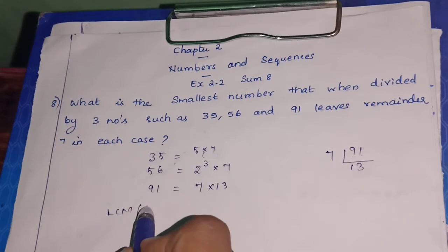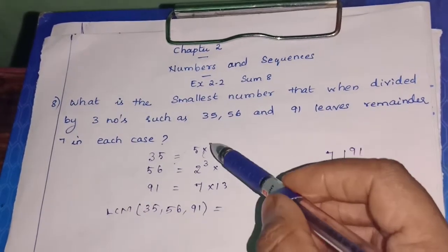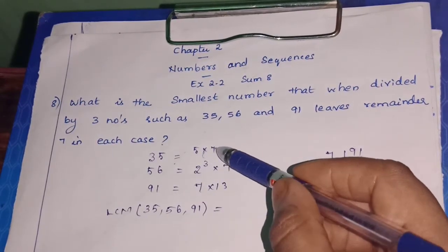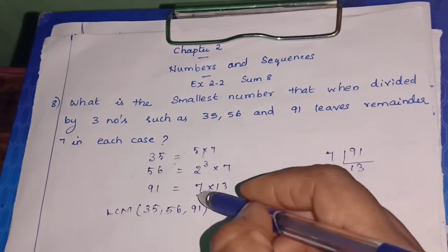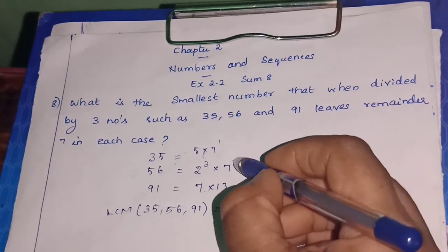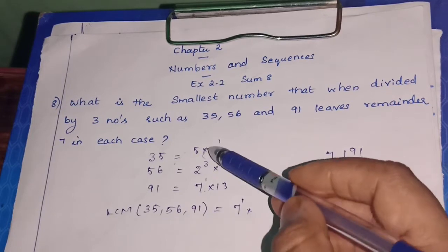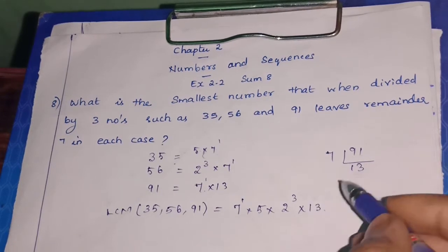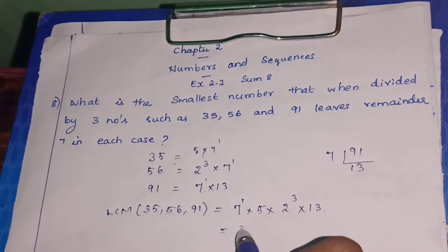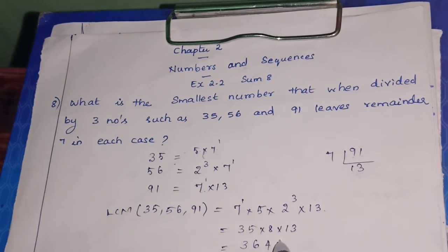Now what is the LCM of 35, 56, and 91? Only 7 is common to all three, and all powers are 1, so we write 7 once. Then for the non-common factors, we write 5, 2³, and 13. So LCM = 7 × 5 × 8 × 13 = 3640.